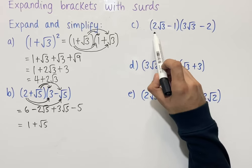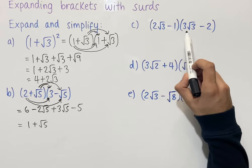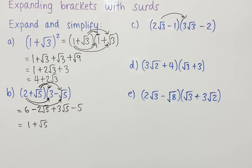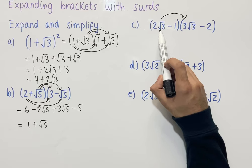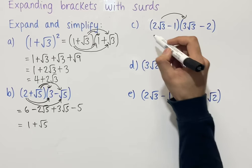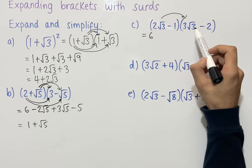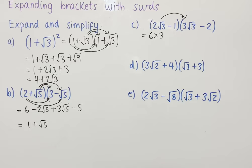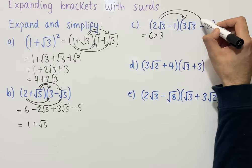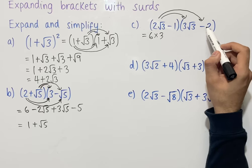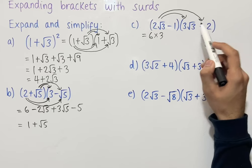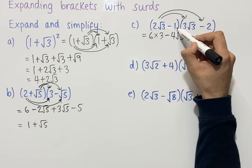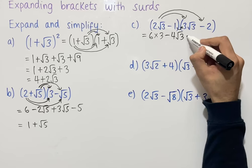For the third question, we're expanding 2 root 3 minus 1 with 3 root 3 minus 2. Using the FOIL method, the first terms are 2 root 3 times 3 root 3. We multiply the numbers in front: 2 times 3 is 6, and root 3 times root 3 gives 3, so we have 6 times 3. The outside terms give 2 root 3 times minus 2, which is minus 4 root 3. The inside terms give minus 1 times 3 root 3, which is minus 3 root 3.